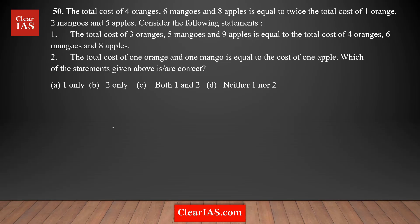The cost of 4 oranges, 6 mangoes and 8 apples is equal to twice the total cost of 1 orange, 2 mangoes and 5 apples. There are 2 statements and we need to check which one of the following statements is correct. What we're going to do is form an equation out of it and first analyze the statement given.